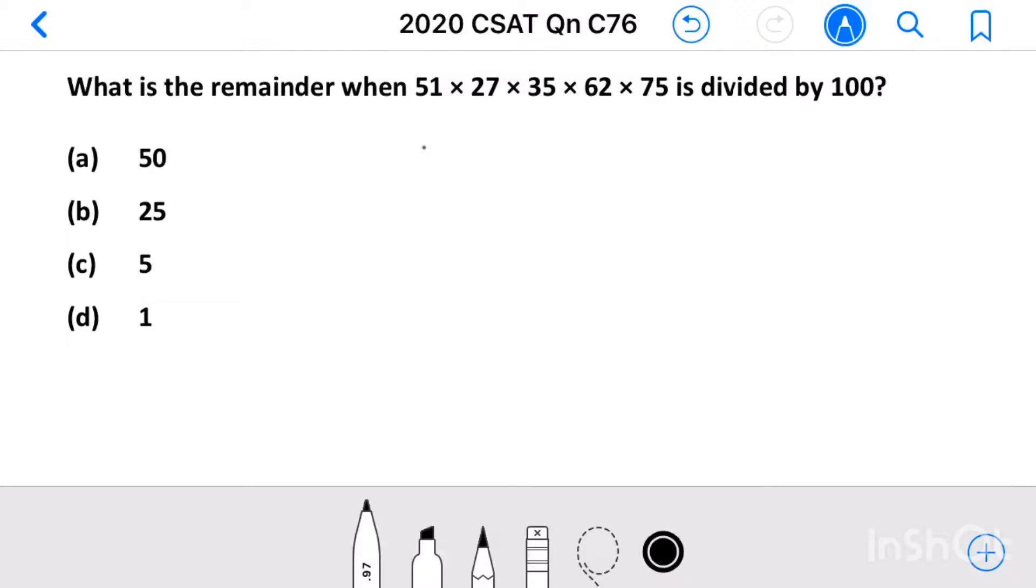Question number 76. What is the remainder when 51 into 27 into 35 into 62 into 75 is divided by 100?